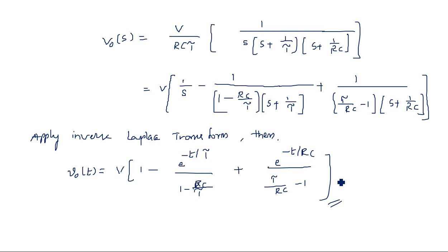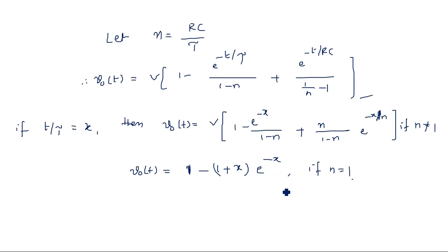This is about the operation of a low-pass RC network when an exponential input V into (1 minus e to the power minus t/tau) is applied, where tau is the time constant of the input waveform from the signal generator. Thank you.